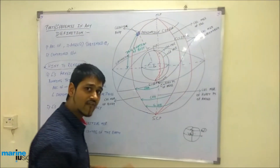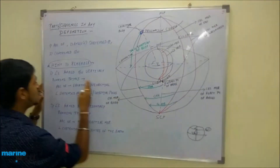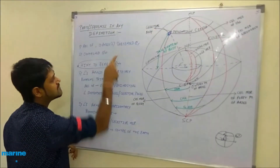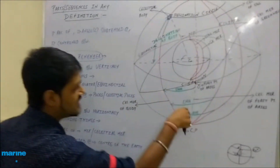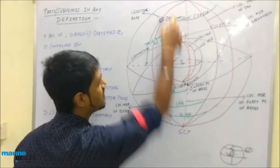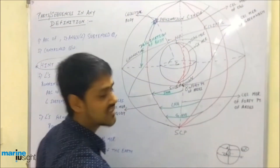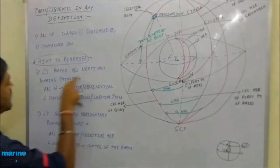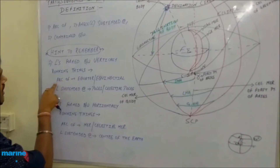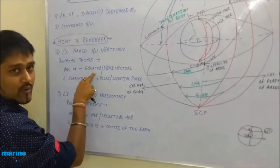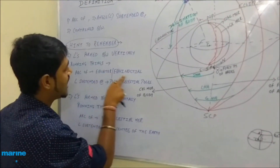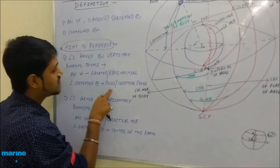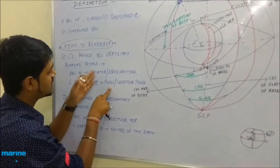After remembering these points, going back to the main framework. These angles are clearly formed between vertically running things — the celestial meridians. For vertically related things, the arc will always be of the equinoctial in case of the celestial sphere, and the angle subtention will be at the celestial poles.